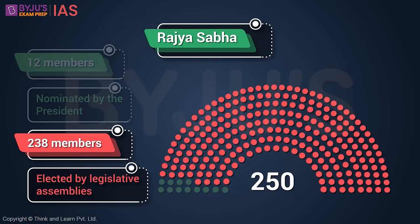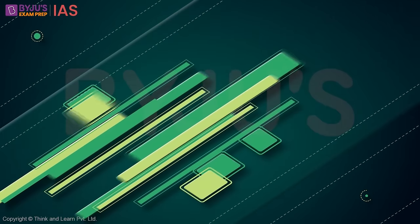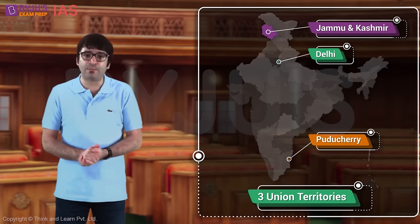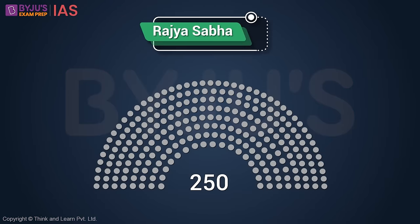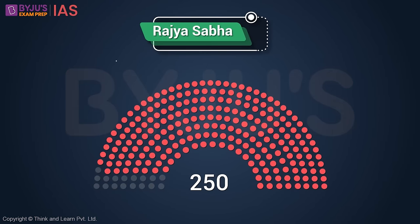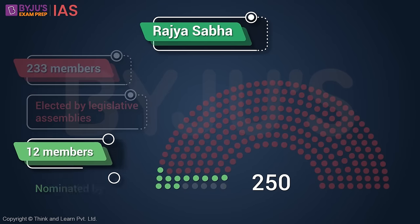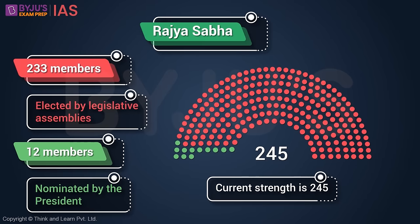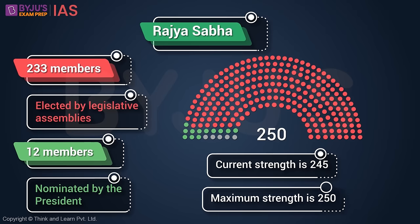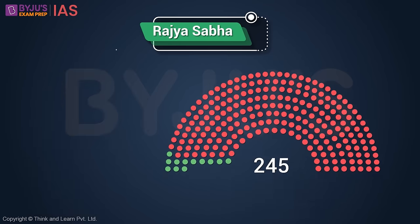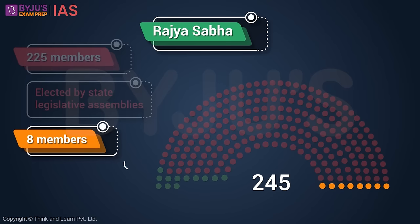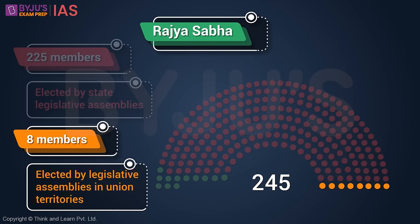238 members are to be elected to Rajya Sabha by legislative assemblies. Since we have only 28 states and 3 union territories with a legislative assembly, this number has reduced to 233. So 233 are now elected and 12 members are nominated, making the current strength of Rajya Sabha 245. The maximum is 250. Of the elected members, 225 are elected by state legislative assemblies and 8 by legislative assemblies in union territories.